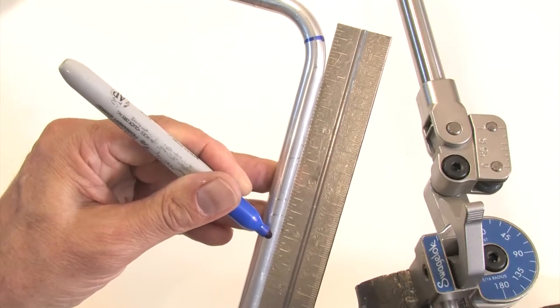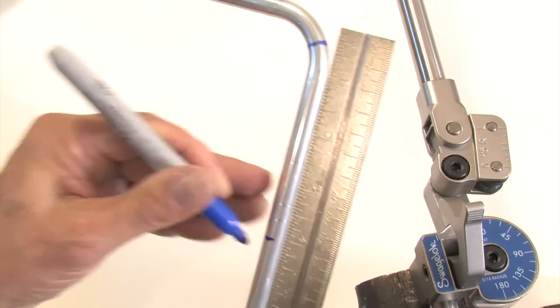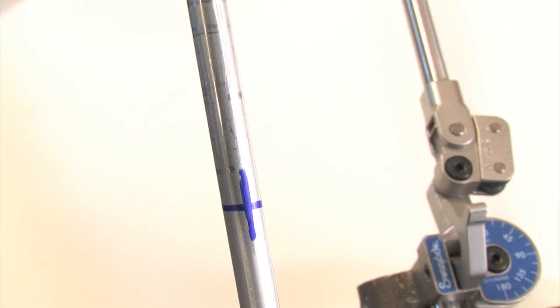Mark the second bend four inches from the center line of the first leg. Make a directional mark to indicate the outside or heel of the bend. This will help you make the bend in the right direction.